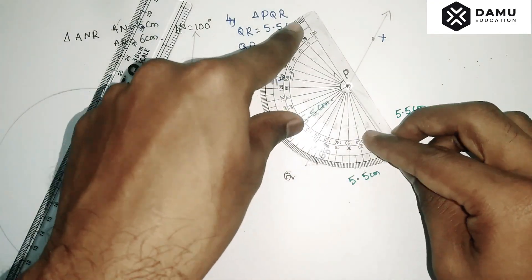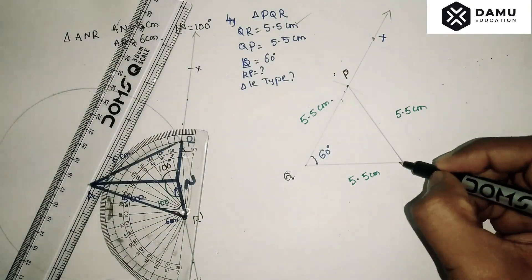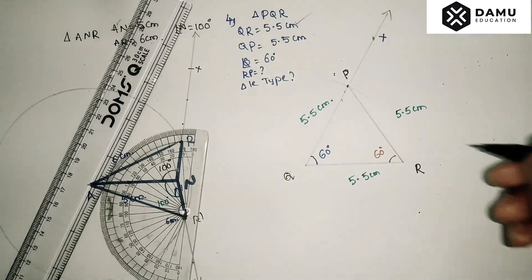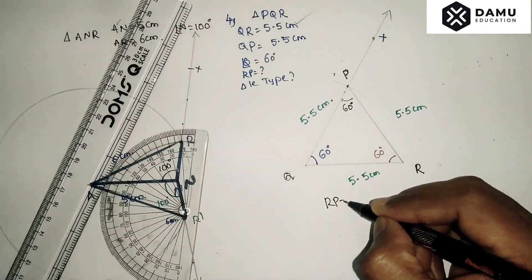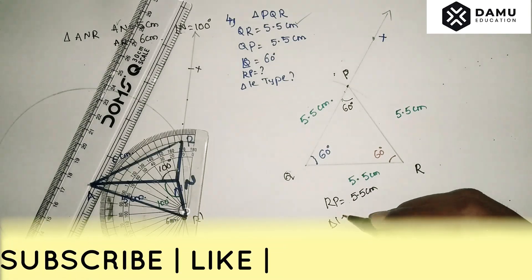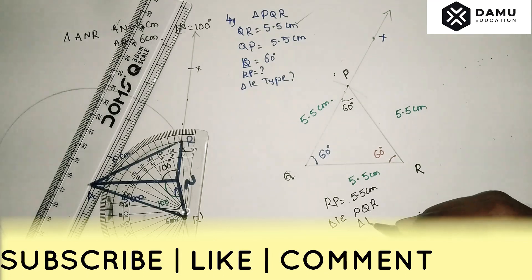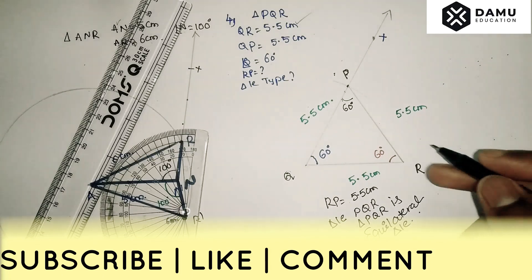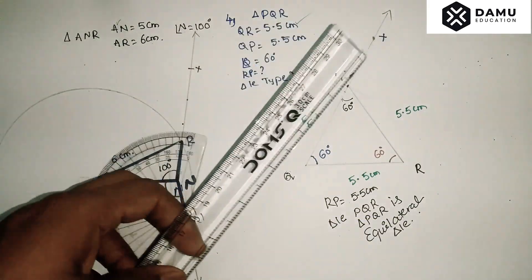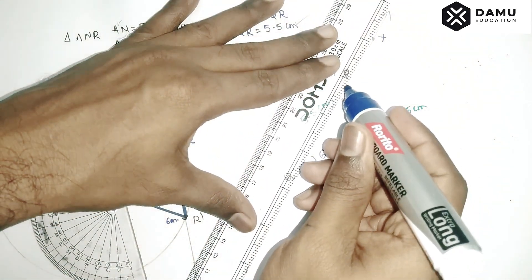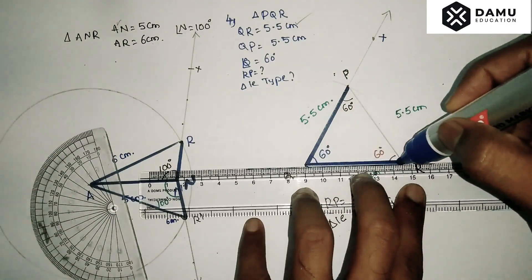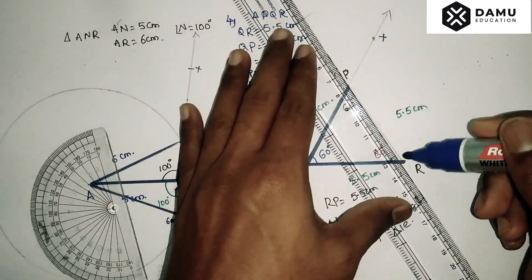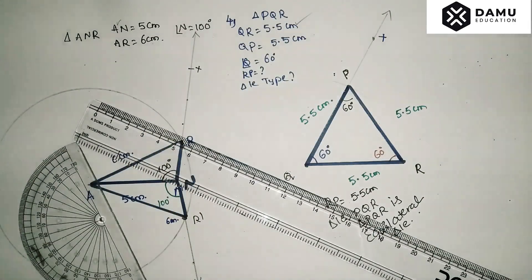When we measure the angles, we are getting 60 degrees everywhere — all three angles are 60 degrees. So RP equals 5.5 centimeters, and triangle PQR is an equilateral triangle, because all sides are equal in length. Draw it neatly in your classwork — it will look more attractive. Thanks for watching, please subscribe.